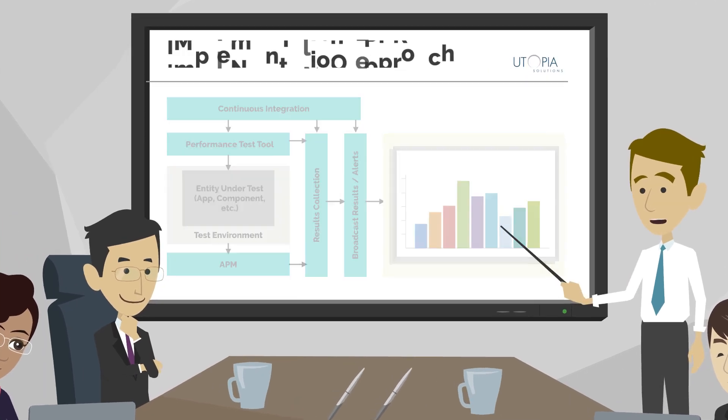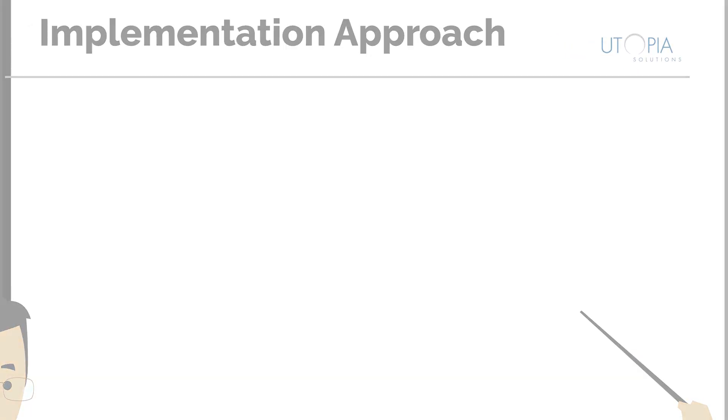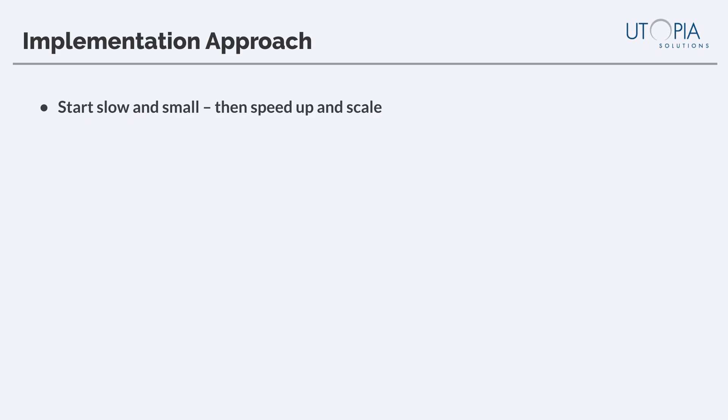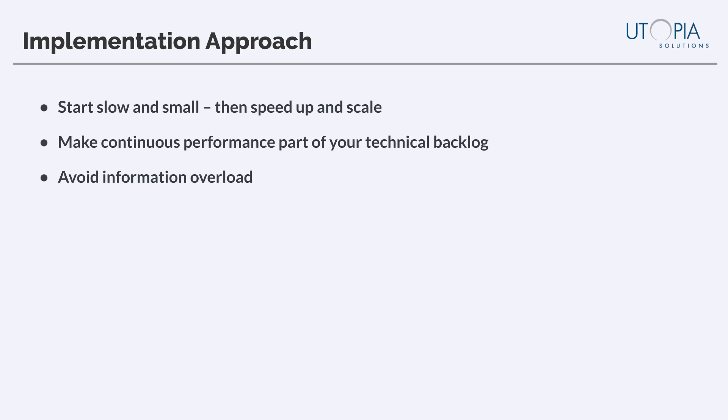Before we wrap up, it's important to step back and think about some of the realities associated with this implementation. First, I recommend you start small. A good place to start is running some component level tests against a few of your more critical components. Get comfortable with the process and the tools it takes to execute the test as part of your CI process and get the information to the team in a consumable and actionable state. Work out the kinks and then scale to other components, other teams, and eventually to other stages of the delivery cycle. And as I mentioned, this shouldn't be off the books work — make implementation part of your technical backlog. Part of getting comfortable with the process is not overwhelming your team, which is another reason to start small.